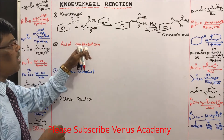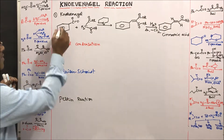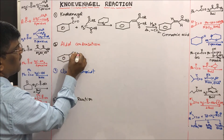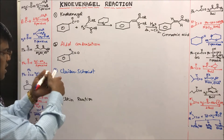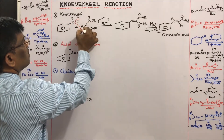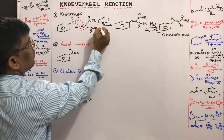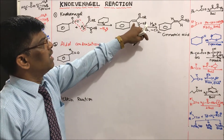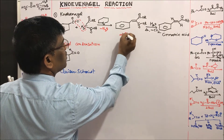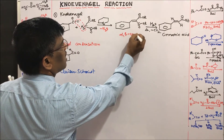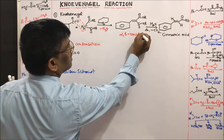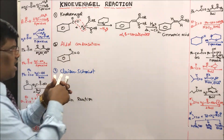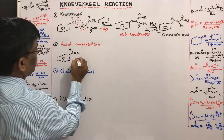Now for the Aldol condensation, I can take benzaldehyde as the aldehyde component. The overall reaction involves water going out — minus water — to give the alpha-beta unsaturated diester product. This is a crossed aldol condensation reaction.